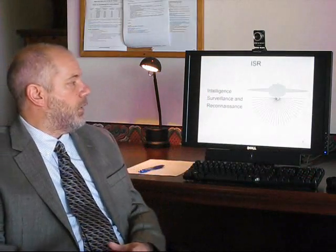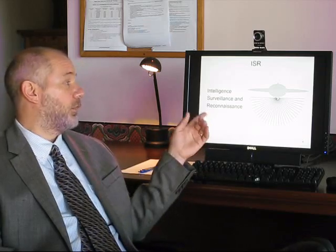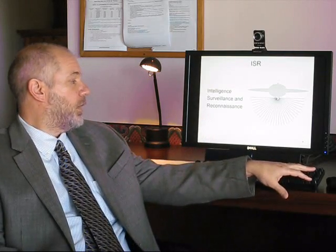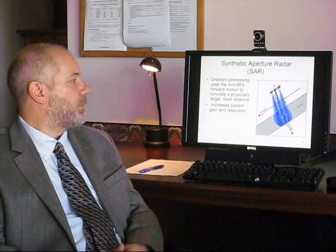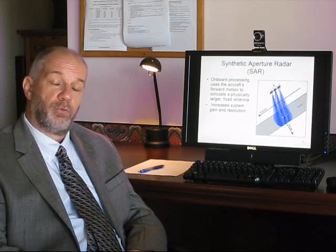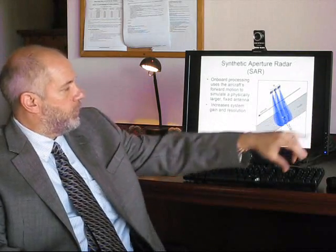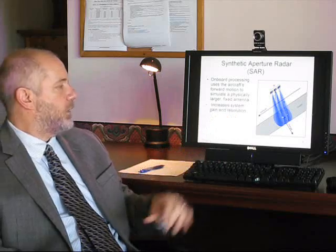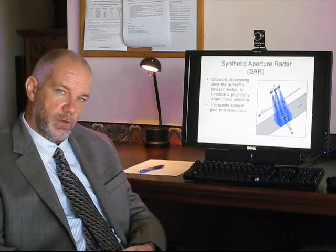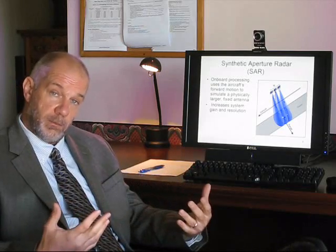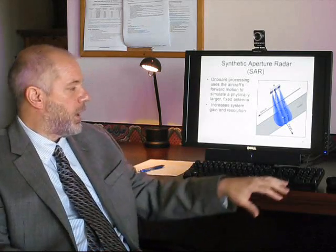Now why do we have unmanned aircraft? The main idea is to put some type of camera or sensor on board the platform. Nearly all unmanned aircraft have some form of that technology on board. A term you'll hear a lot for unmanned aircraft is ISR, which stands for Intelligence, Surveillance, and Reconnaissance. One type of sensor popular for some unmanned aircraft is something called Synthetic Aperture Radar, or SAR. The SAR radar takes advantage of the motion of the aircraft and through signal processing is able to simulate a very large fixed antenna, which gives extreme high resolution. It does not produce video but rather still images, with much higher resolution than possible with a normal optical camera.